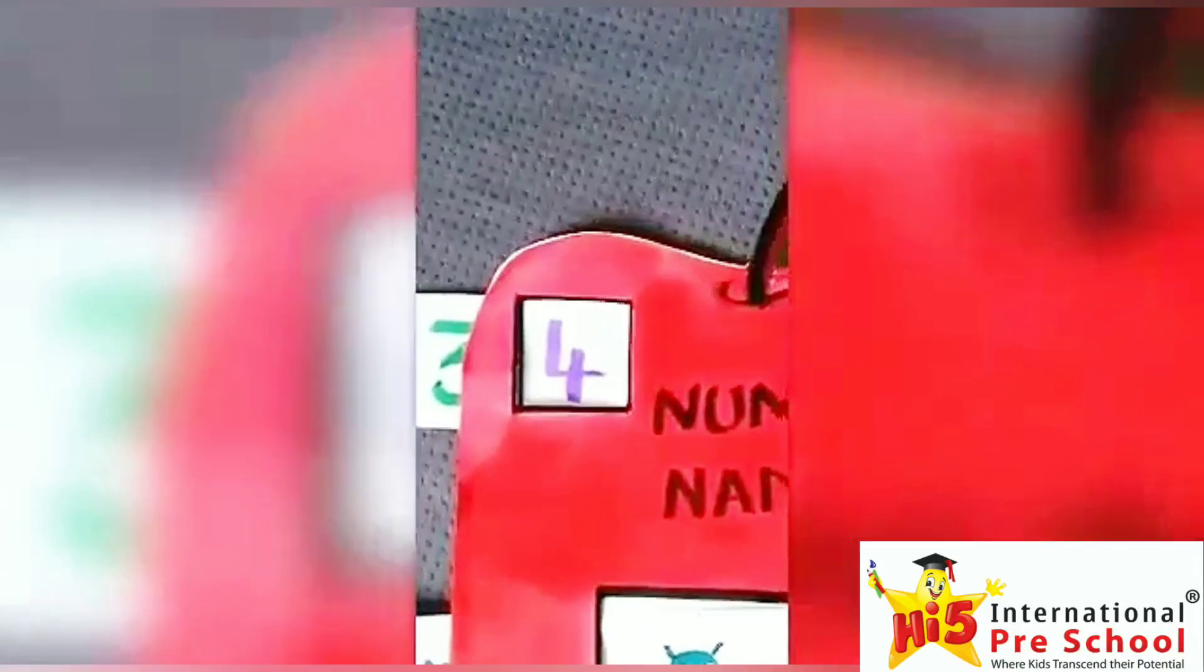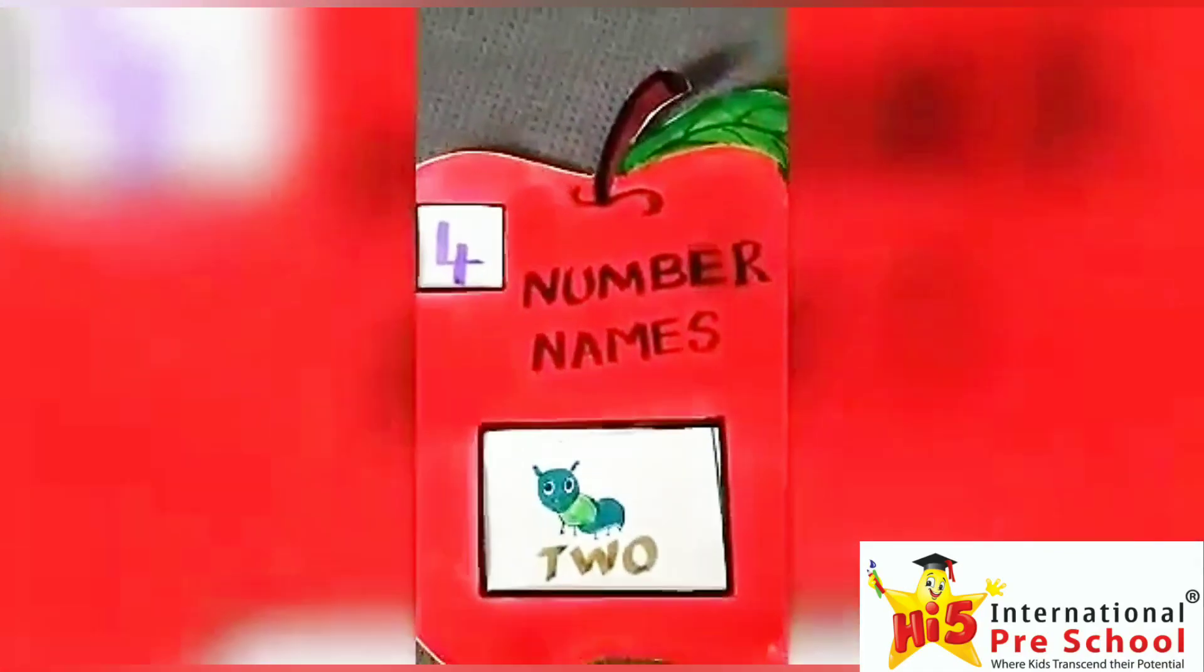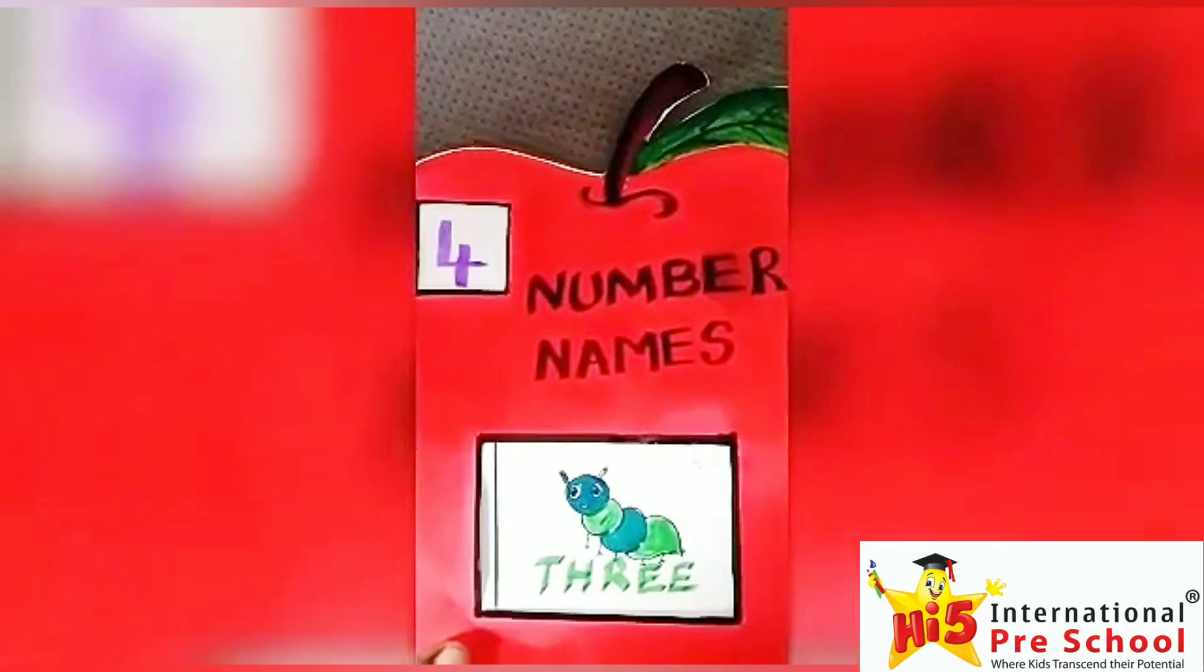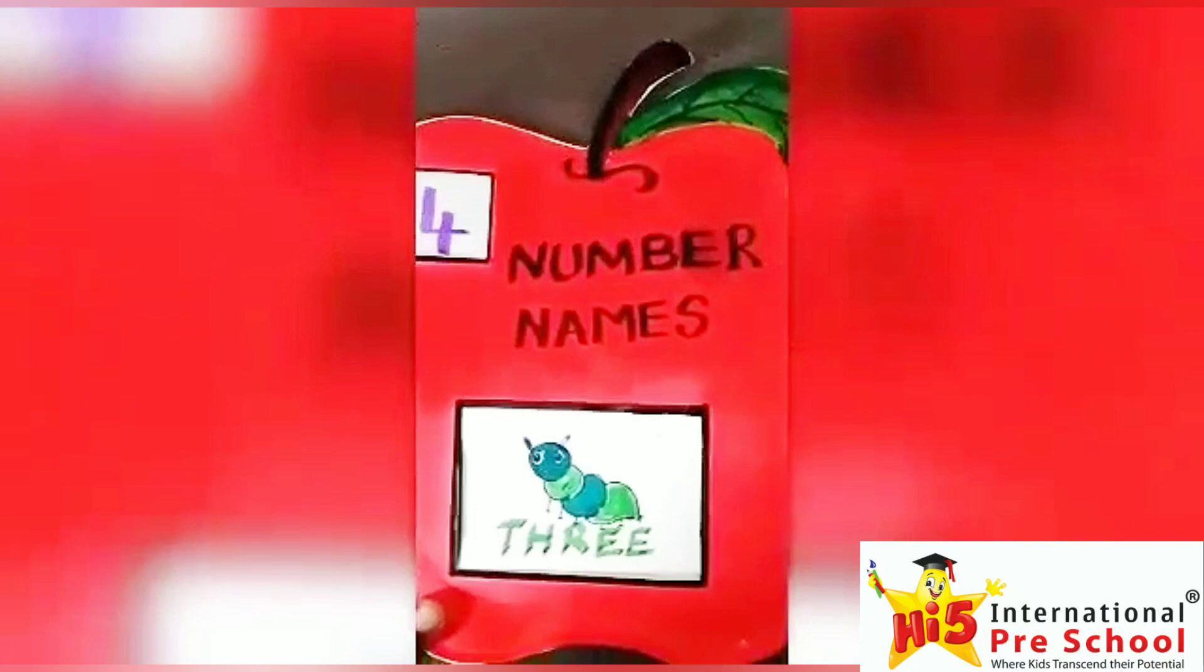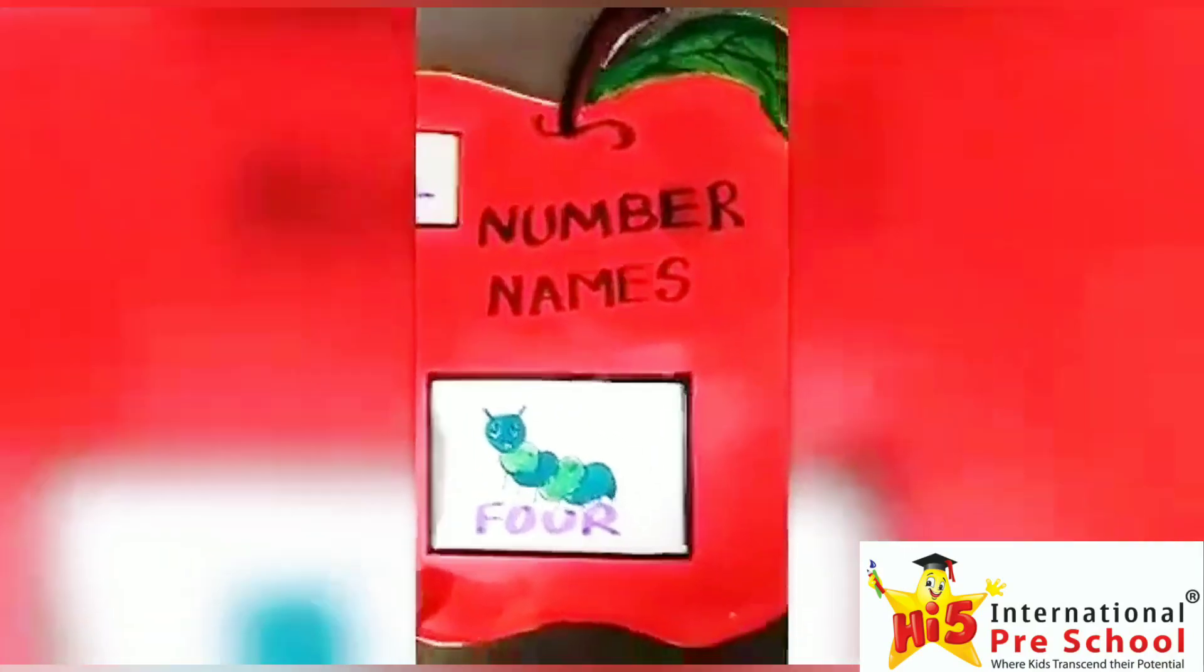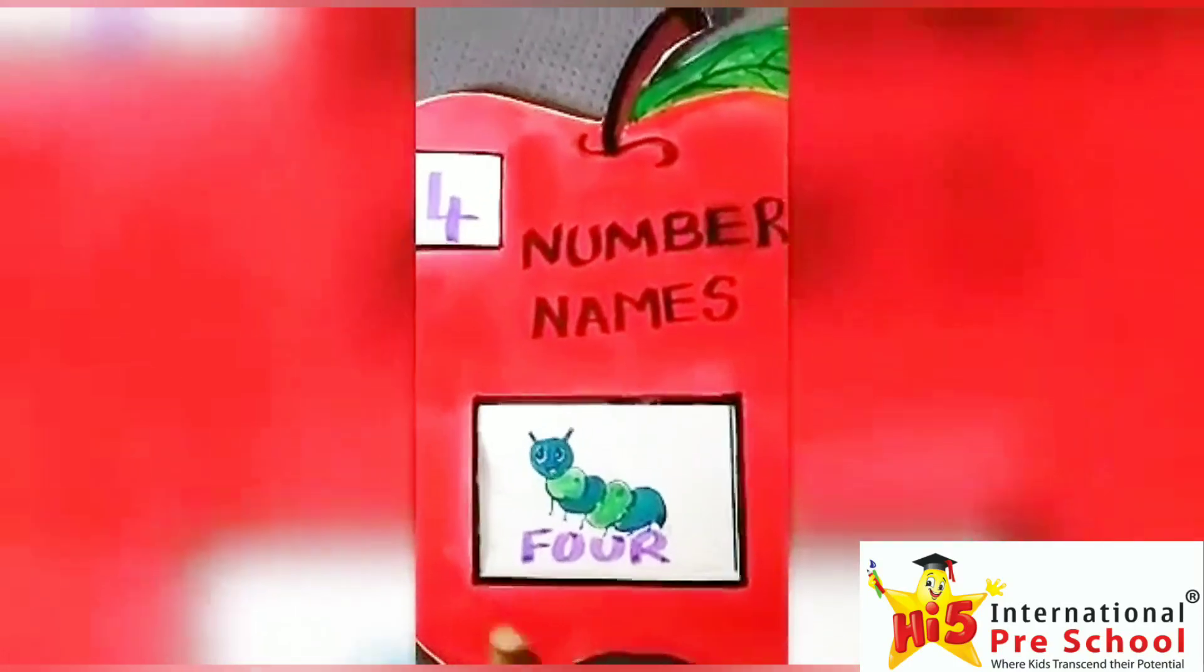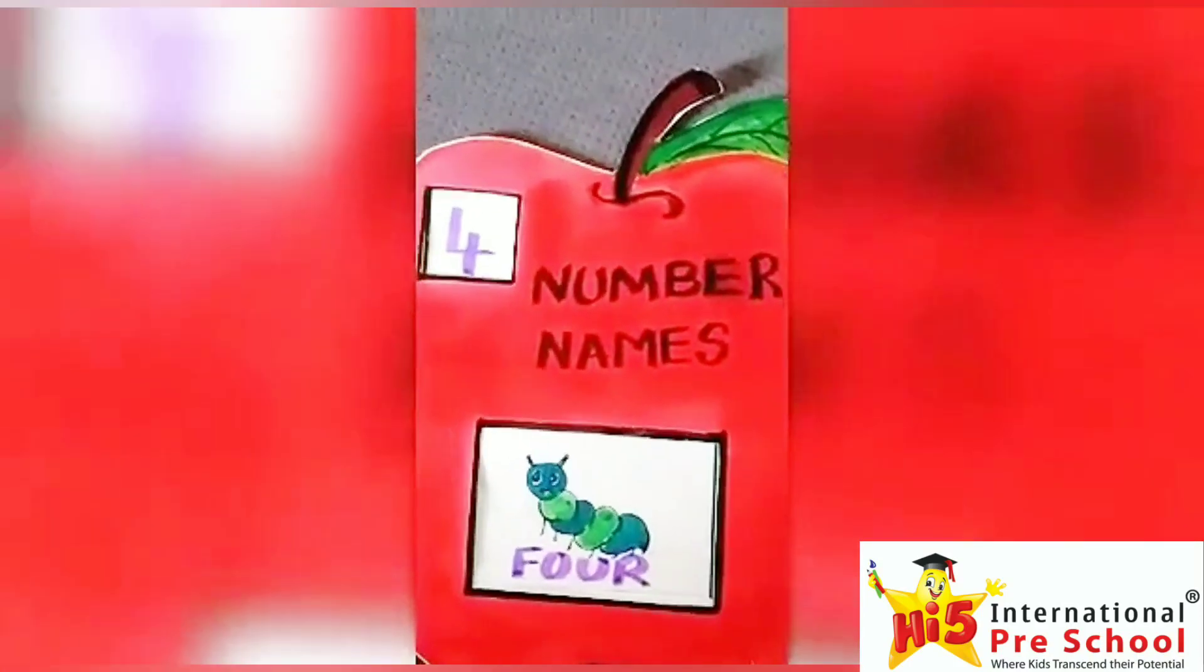Can we do the same thing with another number? Now, we are seeing 4 in the top opening. And count the compartments of the caterpillar. 1, 2. It's not matching. Now, shall we count now? 1, 2, 3. No, it's not matching. Can you count it now? 1, 2, 3, 4. Yes. It's matching with the number. F, O, U, R. 4.